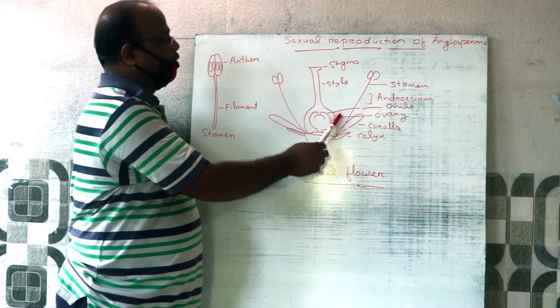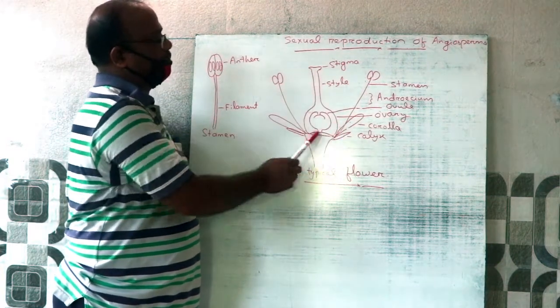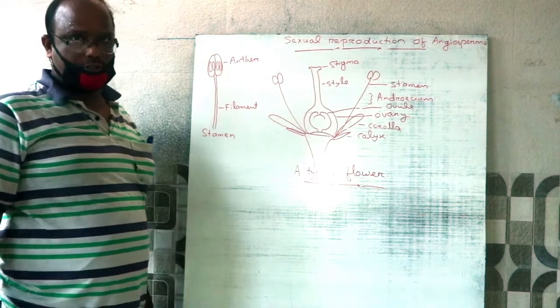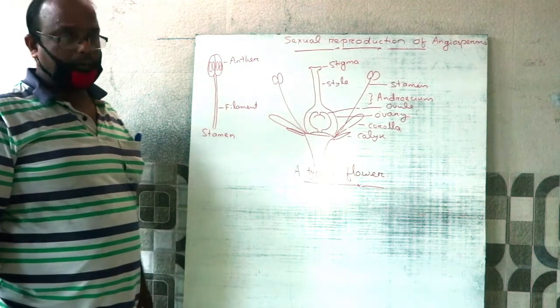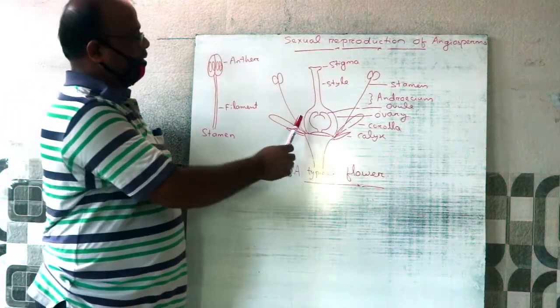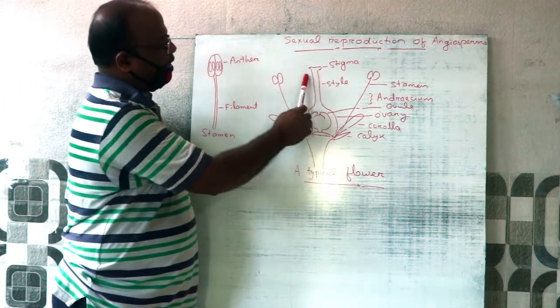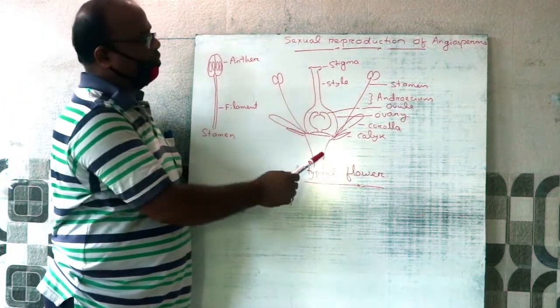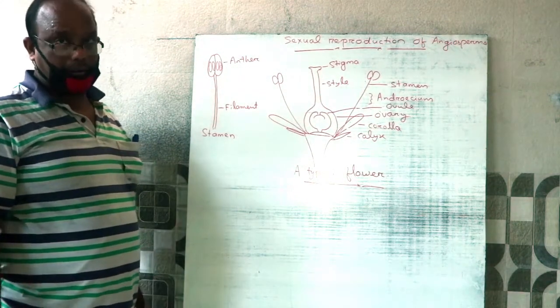Similarly, the female reproductive whorl of a flower is known as the Gynoeceum. The individual unit of the Gynoeceum is called a Carpel.